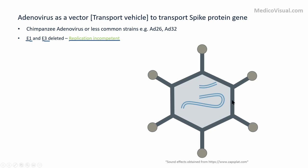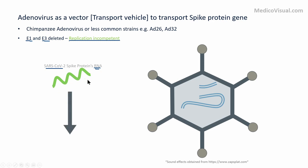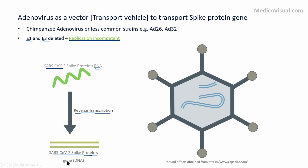This modified adenovirus cannot cause any disease when it enters into the cell. Then, as you know, the SARS-CoV-2 is an RNA virus, and within its RNA there is a gene — a recipe to synthesize the spike protein. In the lab, we convert this spike protein RNA through the process of reverse transcription into spike protein double-stranded DNA. We then insert this spike protein gene into the adenovirus.